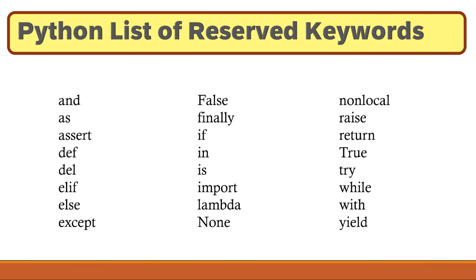Here is a list of Python reserved keywords which cannot be used as variable names, or for that matter function names, or anything that identifies something. Notice that these are also case sensitive. For example, 'True' and 'False' need to be capitalized, as we have just covered, and the word 'None' is capitalized as well, but everything else is in lowercase.